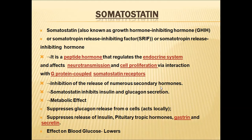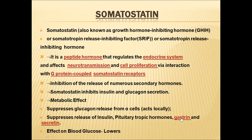Somatostatin inhibits the release of secondary hormones, including insulin and glucagon. It suppresses glucagon release from alpha cells and suppresses insulin hormone release as well. It also suppresses the release of pituitary trophic hormones, gastrin, and secretin. Despite these seemingly contrary effects, somatostatin ultimately helps lower blood glucose levels.